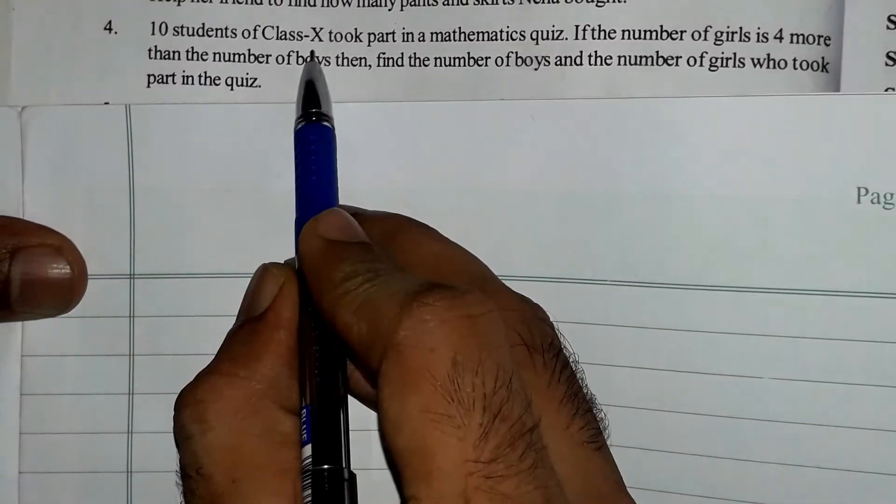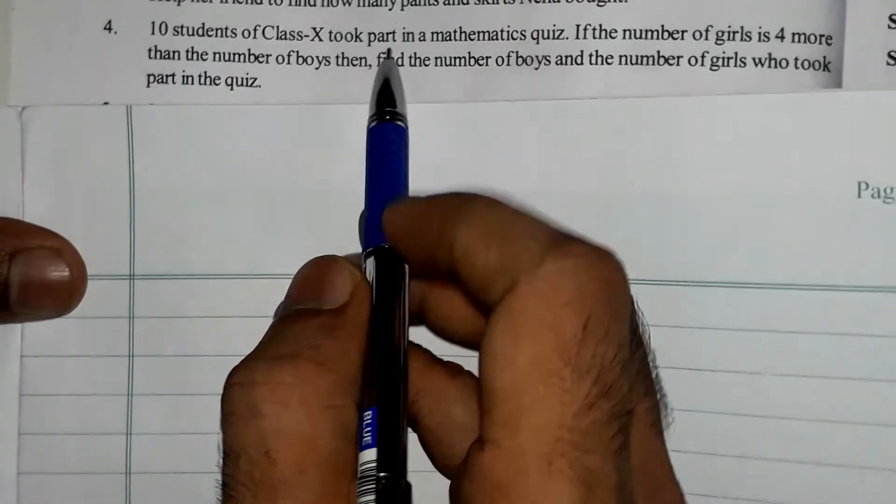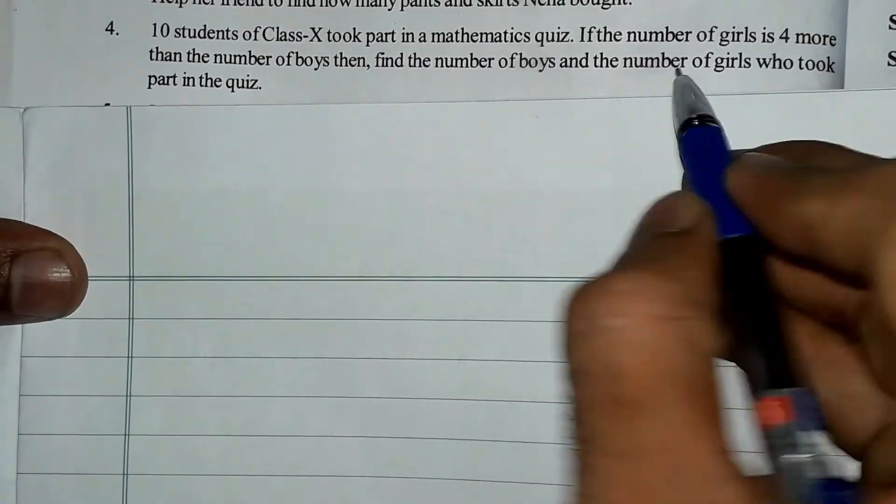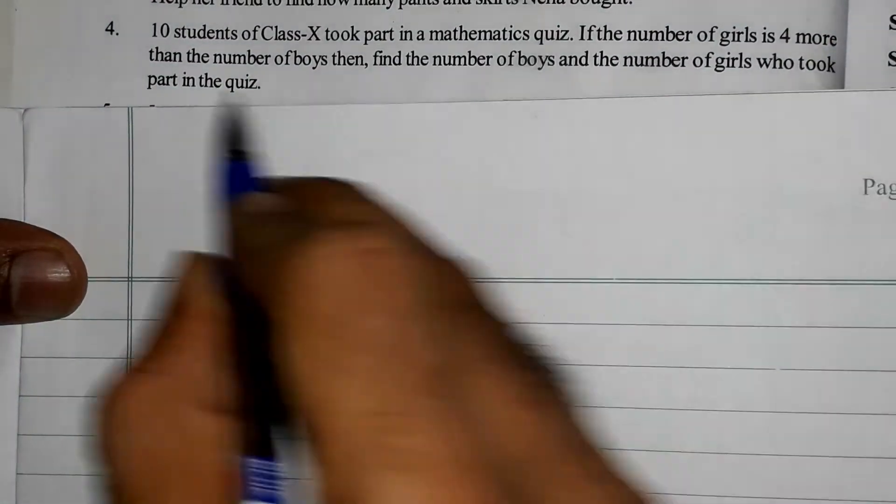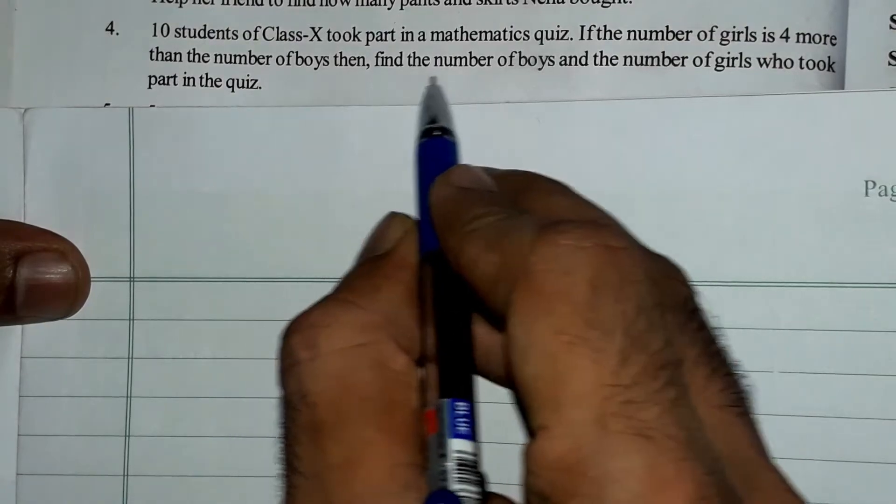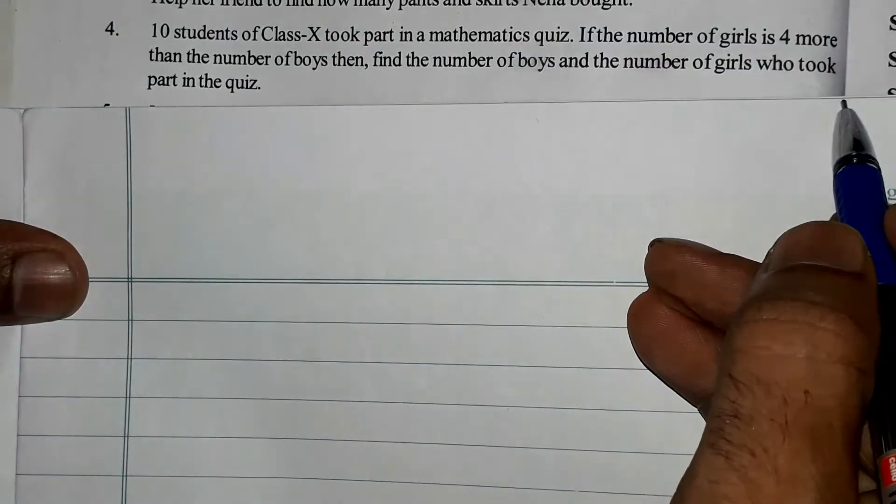Fourth problem: 10 students of Class X took part in a mathematics quiz. If the number of girls is four more than the number of boys, then find the number of boys and the number of girls who took part in the quiz.